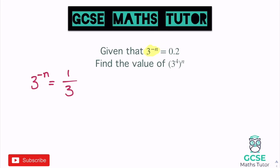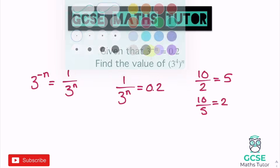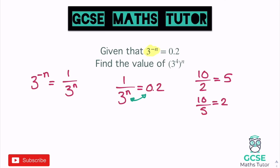So we have 1 over 3 to the power of n equals 0.2. Since 1 to any power is still 1, we just write it as 1 divided by 3 to the power of n equals 0.2. If 1 divided by something equals 0.2, we can swap those values around — just like 10 divided by 2 equals 5 means 10 divided by 5 equals 2. Swapping gives us 1 divided by 0.2 equals 3 to the power of n.